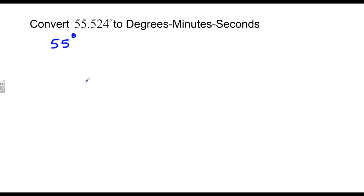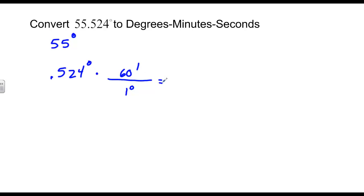We have 55.524 degrees in decimal degrees, and we're going to change this to degrees, minutes, seconds. We know there are 55 full degrees in this decimal degree. We have to convert 0.524 degrees into minutes and seconds. To do this, we use dimensional analysis — we'll get rid of the degrees on the bottom and make its equivalent on the top by changing its units to minutes. So 1 degree is 60 minutes.